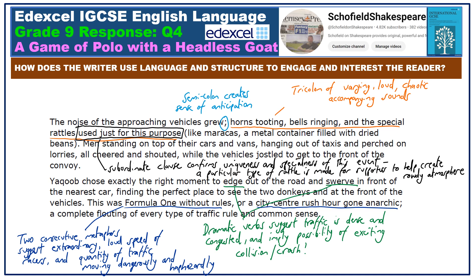There's a great deal of chaotic sound within this section, which engages and interests the reader. Notice the tricolon there of the horns tooting, the bells ringing, and the special rattles used just for this purpose. What we can see here is just how much of an event this race is. The horns tooting presumably come from some of the 50 cars behind the donkey carts jostling for position. Bells ringing and the special rattles are likely to be used by spectators on the sidelines, enjoying the almost carnival-esque atmosphere. The subordinate clause 'used just for this purpose' really confirms that even supporters make things just for this day, and they contribute to that really vibrant atmosphere.